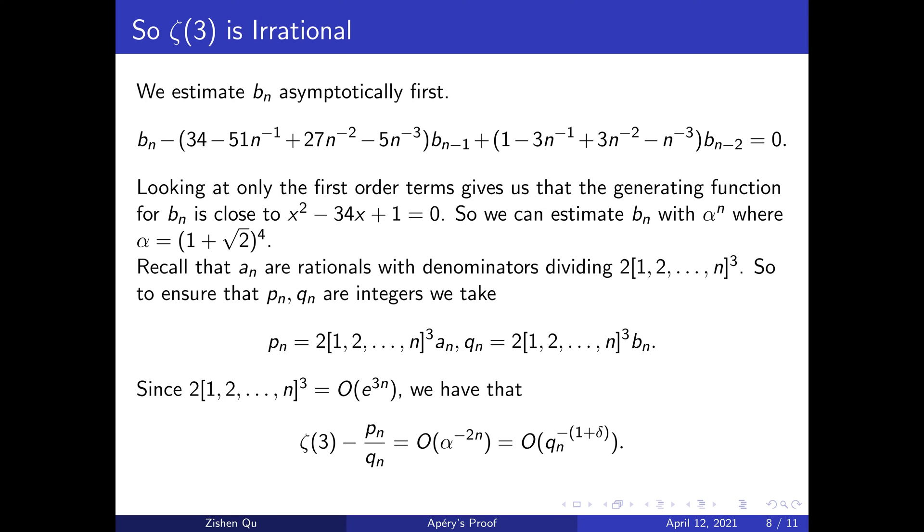Ignoring the terms other than the first order ones, we obtain that the generating function is close to x² - 34x + 1 = 0. So we can estimate b_n by α^n with α equaling to the fourth power of 1 + √2.